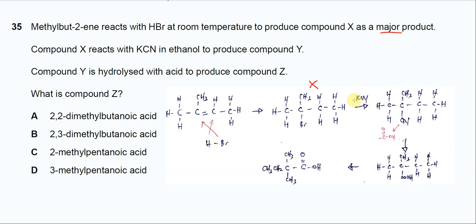Compound X will further react with KCN in ethanol. We know that it will undergo substitution, so the cyanide will substitute the bromine here and form this compound, compound Y.